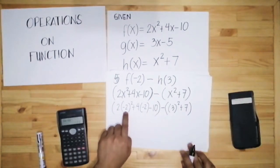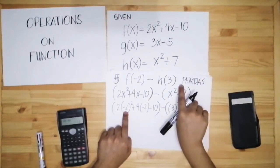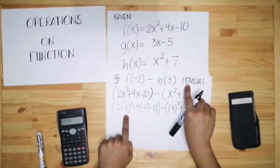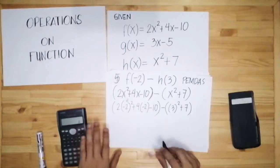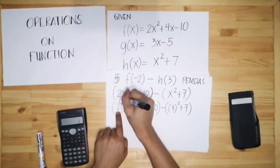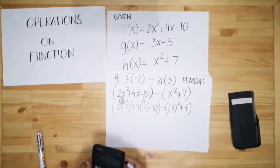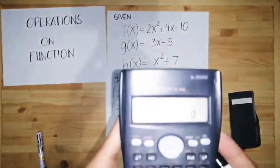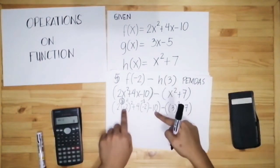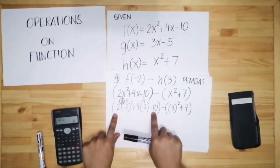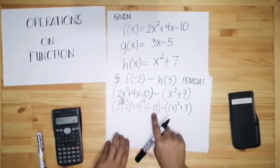Now evaluate following order of operations: exponents first. Negative 2 raised to 2 equals positive 4. Positive 4 times 2 equals 8. Then 4 times negative 2 is negative 8. Then negative 10. So: 8 plus negative 8 cancels out, leaving just negative 10 for the first parenthesis.